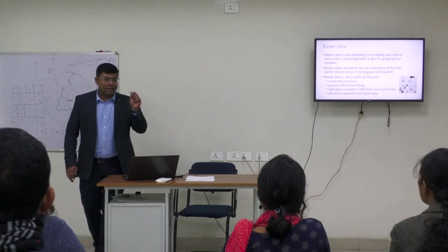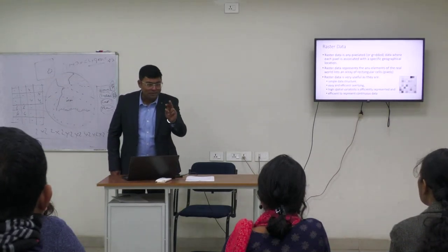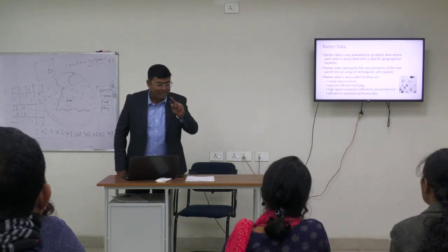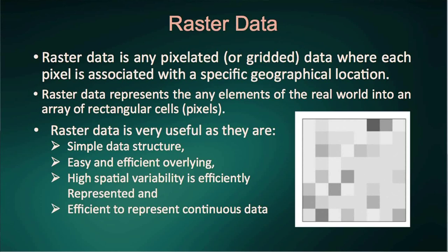On that particular number, which actually contains the information — if you zoom into a particular picture, you will be able to identify these pixels as square picture cells. Raster data represents any element of the real world into an array of rectangular cells, known as pixels. This data is very useful because it has a simple data structure.